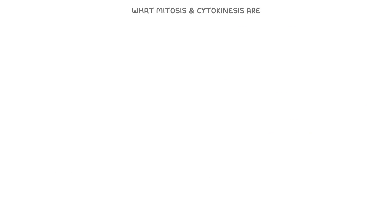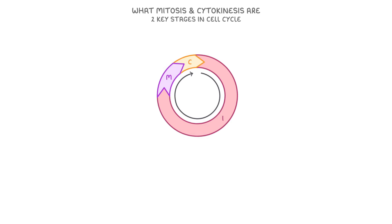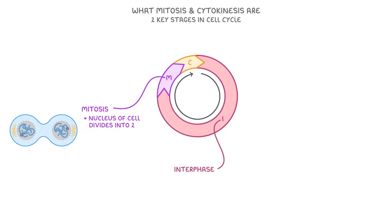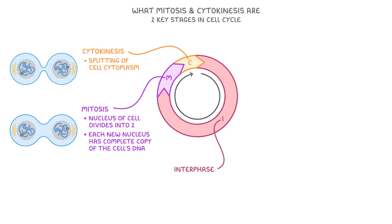Mitosis and cytokinesis are two key stages of the cell cycle that follow interphase. Mitosis comes directly after interphase and is the process where the nucleus of a cell divides into two, and each new nucleus has a complete copy of the cell's DNA. Cytokinesis follows mitosis and is the actual splitting of the cell's cytoplasm, creating two separate cells that each have their own complete set of organelles and enough cytoplasm to function properly.